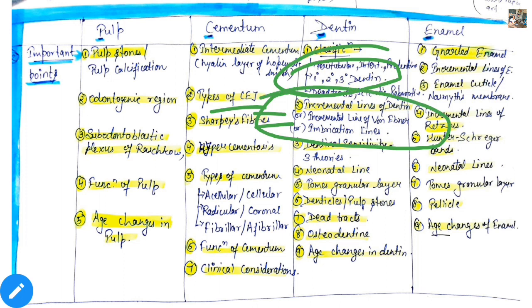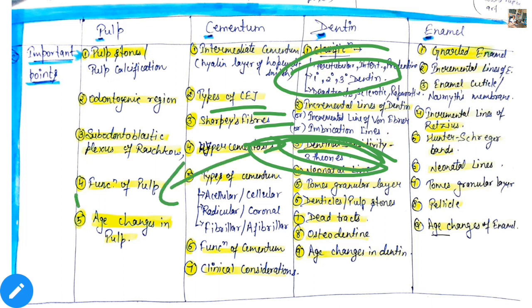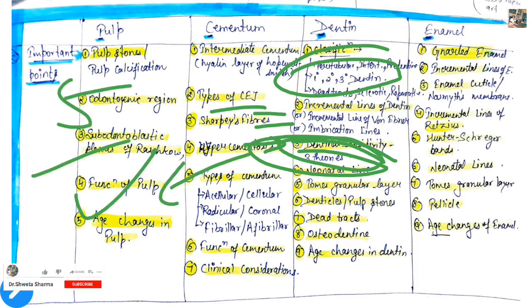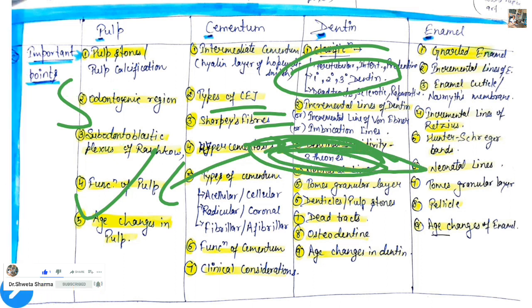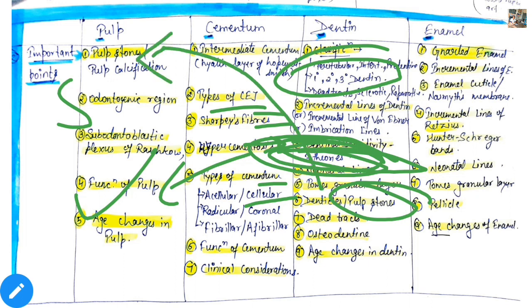And next is dentinal sensitivity. There are three theories related to pain sensation in dentine. These are important points and questions of 5 marks also come in this. Then neonatal lines, which are in our hypocalcified structures. Then Tomes' granular layer, denticles which are also called pulp stones — pulp stones can also be read in the pulp chapter. Then dead tracts, osteodentine and age changes of dentine. These are all the important points in the dentine chapter.